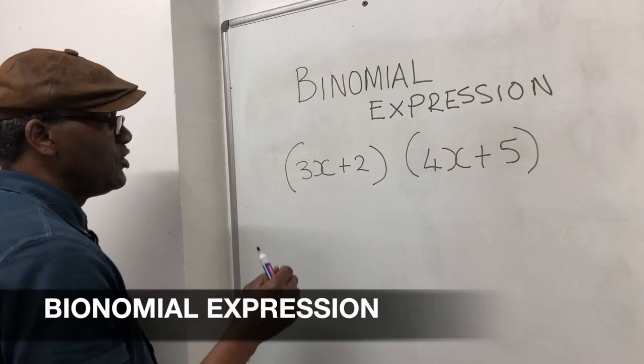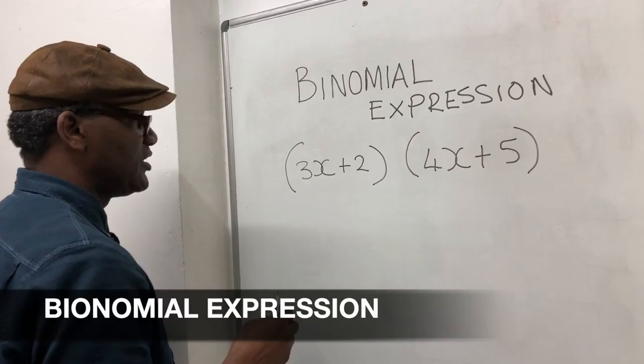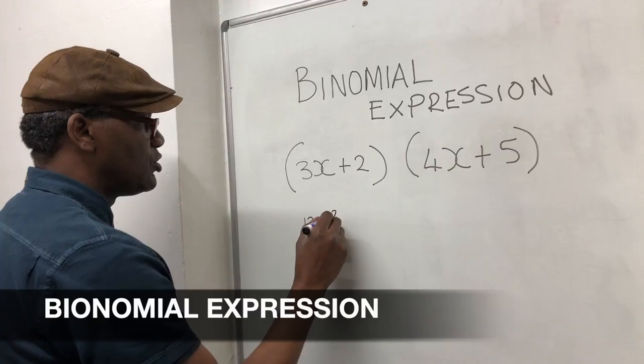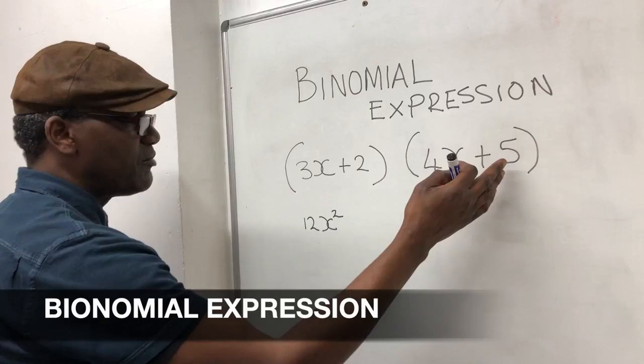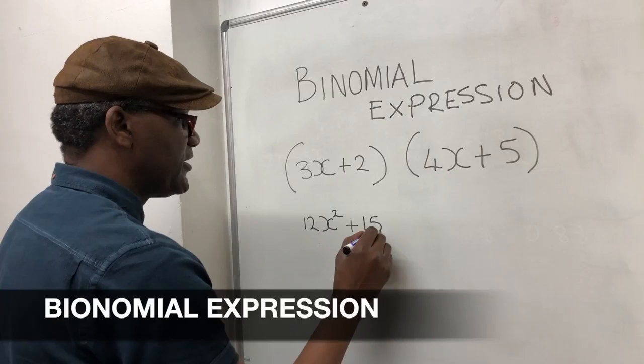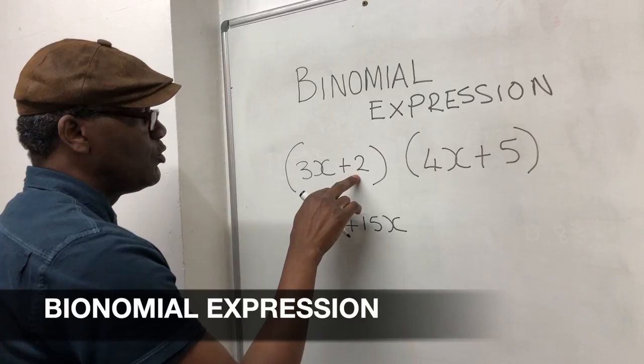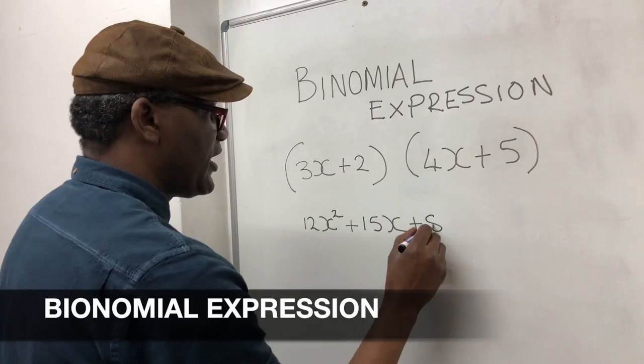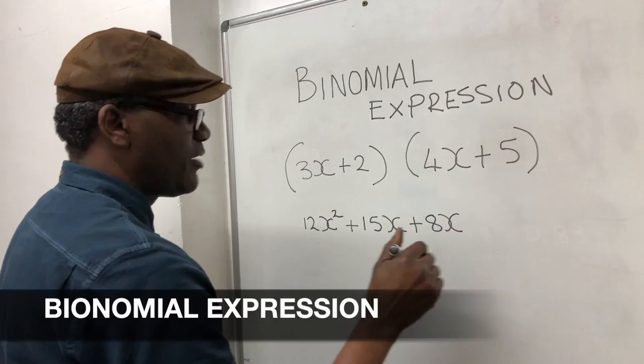The way you calculate this: 3x times 4x gives you 12x squared. Then 3x times 5 gives you 15x. Then 2 times 4x gives you 8x. And 2 times 5 gives you 10.